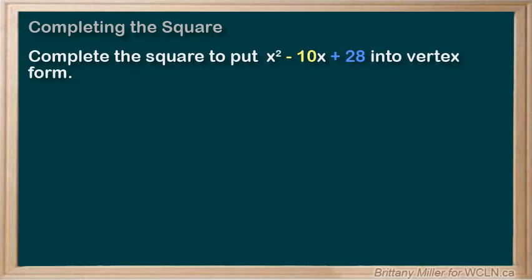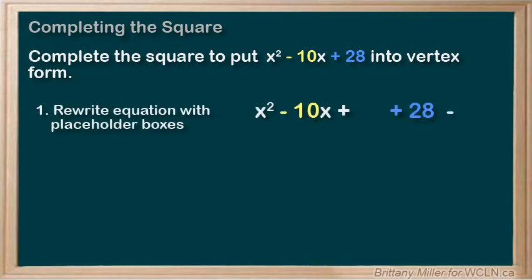Let's do another example with less lecturing and just the steps. Complete the square to put x squared minus 10x plus 28 into vertex form. Step one. I like to write the equation with some empty boxes to leave room for what I'm going to add and then take away.